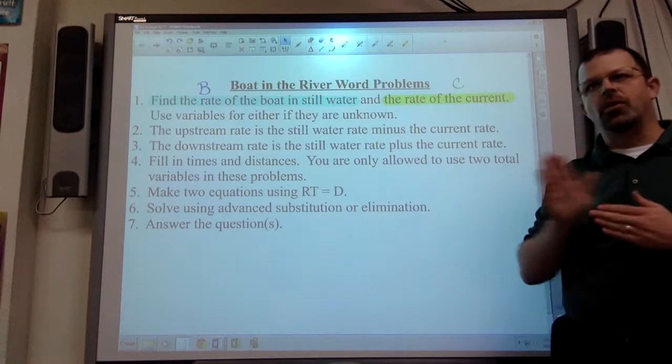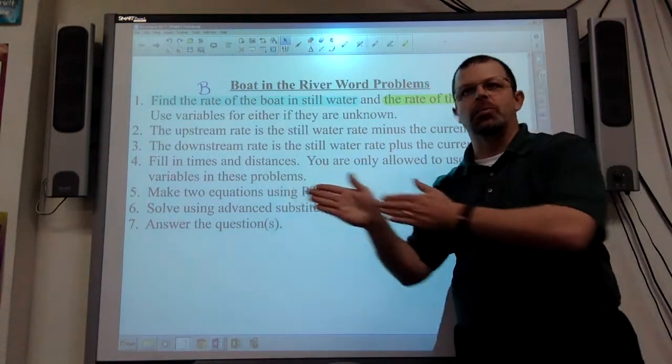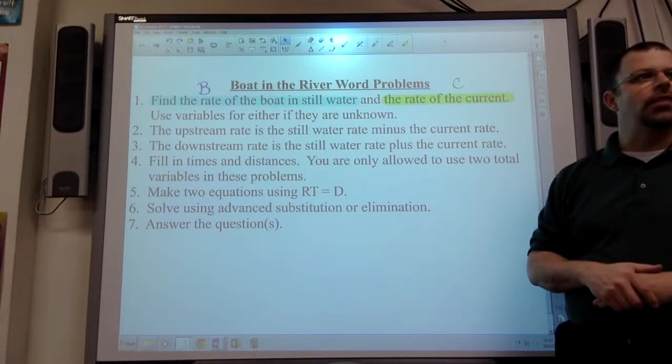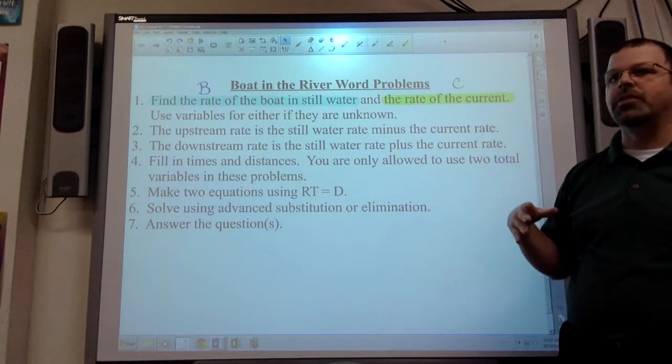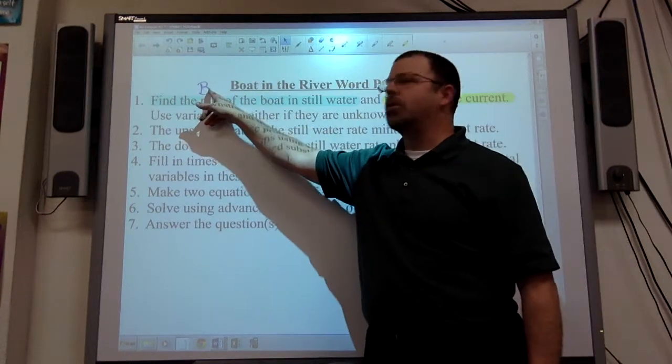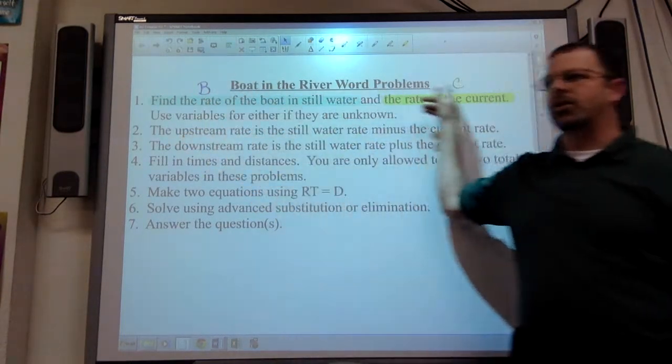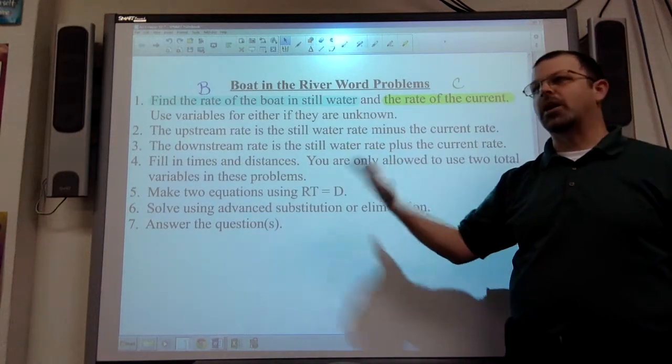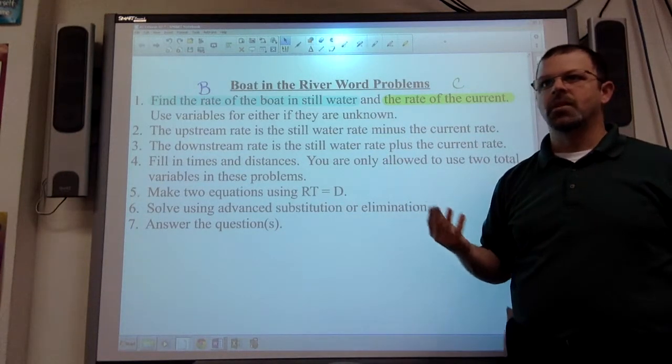Downstream, now you're going this way and the current is also going that way. It's pushing you faster. So boat plus current. Those are going to be your rates every time. And again, if you know specific numbers, the boat can go 20 miles an hour in still water. The current is 5 miles an hour. 20 plus 5 is 25 downstream. Downstream, 20 minus 5 is 15 upstream.